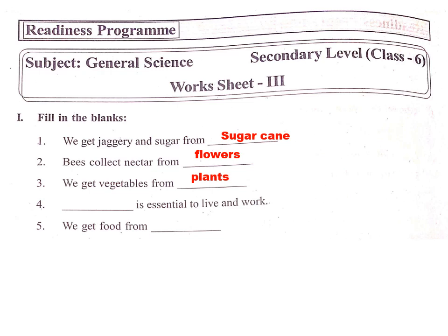Dash is essential to live and work. Which is essential? Yes, energy is essential to live and work. We get food from plants and animals.